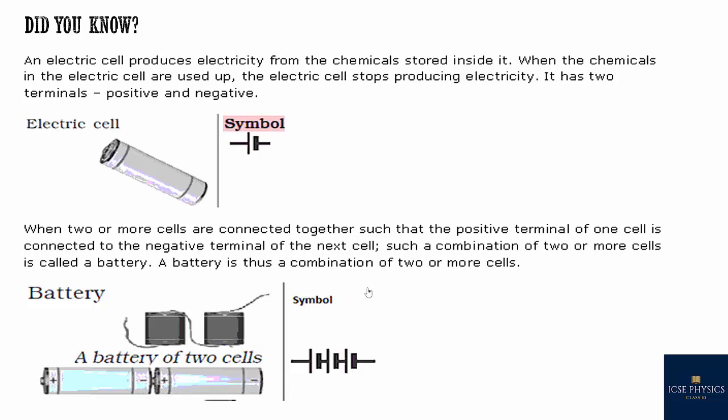An electric cell produces electricity from the chemicals stored inside it. When the chemicals are used up, the electric cell stops providing electricity. It has two terminals — positive and negative. When two or more cells are connected together, with the positive terminal of one cell connected to the negative terminal of the next, such a combination is called a battery. A battery is thus a combination of two or more electrochemical cells.